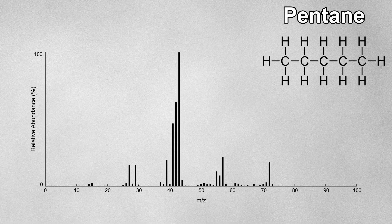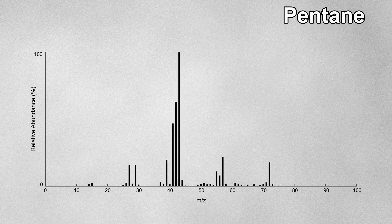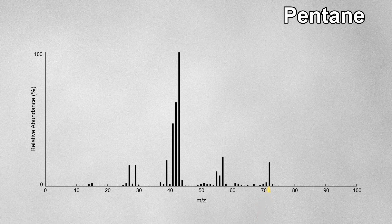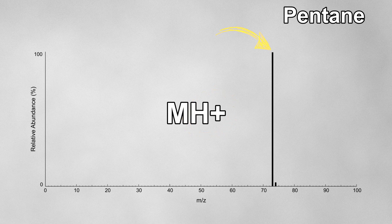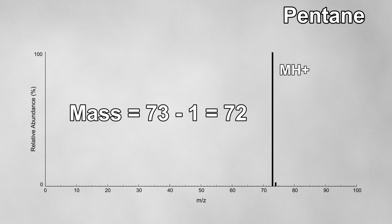If we analyze pentane using softer techniques such as chemical ionization or electrospray ionization, the mass spectrum shows much less fragmentation. Softer techniques tend to leave the molecule intact. Comparing the two: in the electron impact spectrum the molecular ion peak is at 72, which is the relative mass of pentane. In the soft ionization spectrum, the same peak is now at 73 — this makes sense because the molecule was protonated, meaning an H+ ion was added with a relative mass of 1. So this peak is actually the MH+ peak. As long as we're aware of this, we can easily figure out the molecular mass from the MH+ peak.